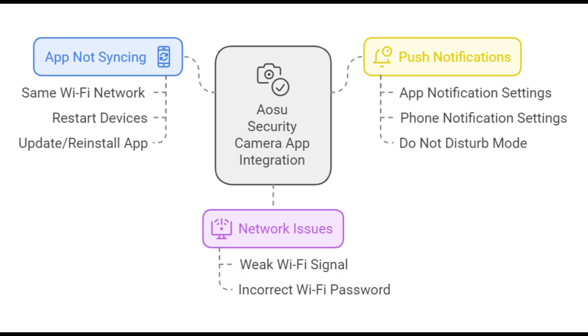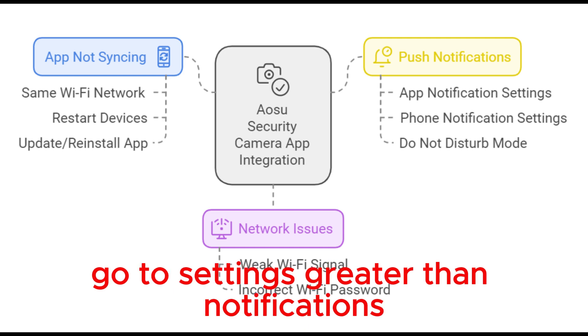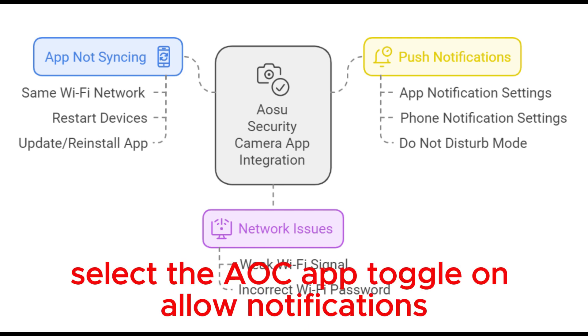For iPhone users, follow these steps. Go to Settings > Notifications. Select the Aosu app. Toggle on Allow Notifications.